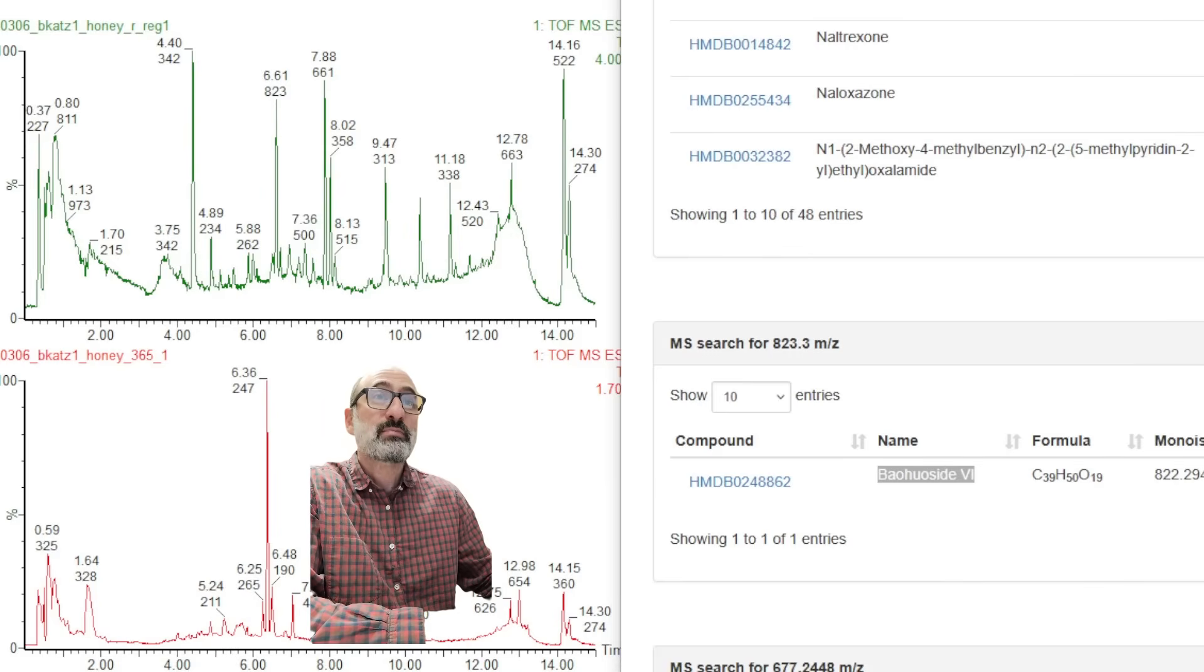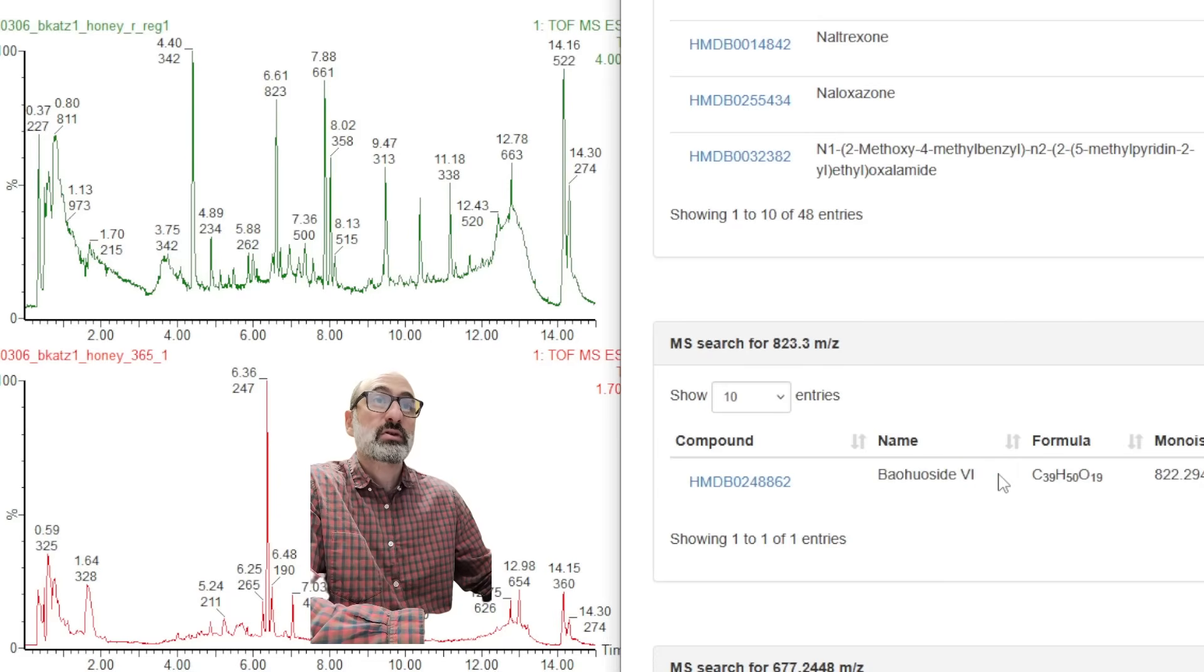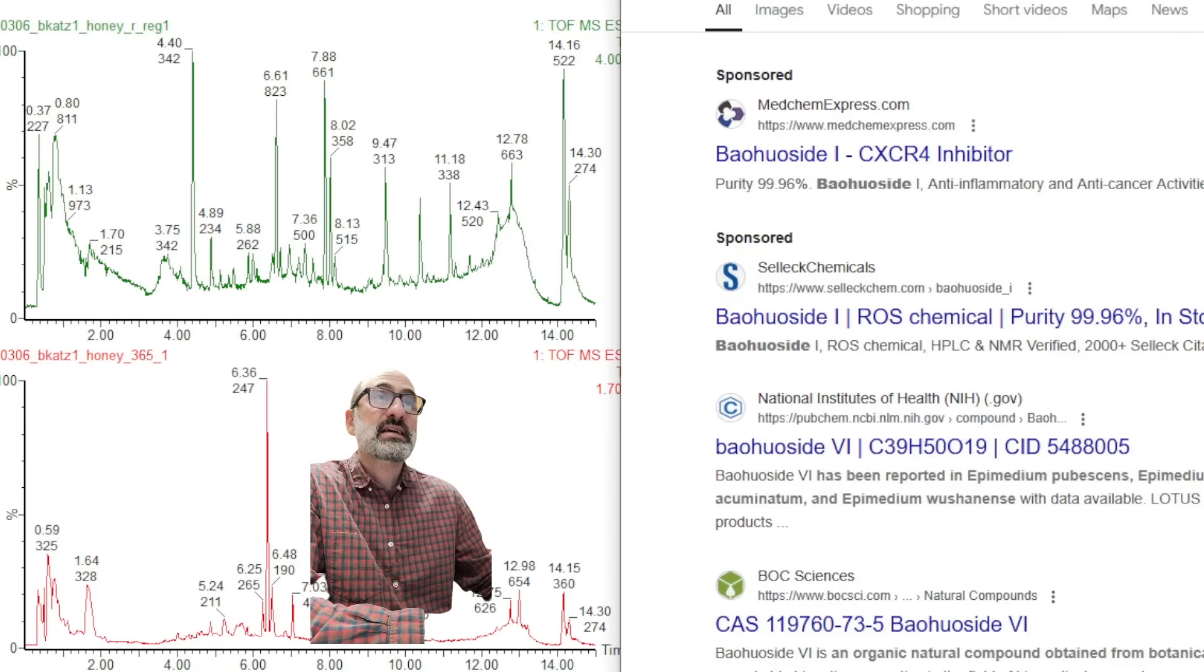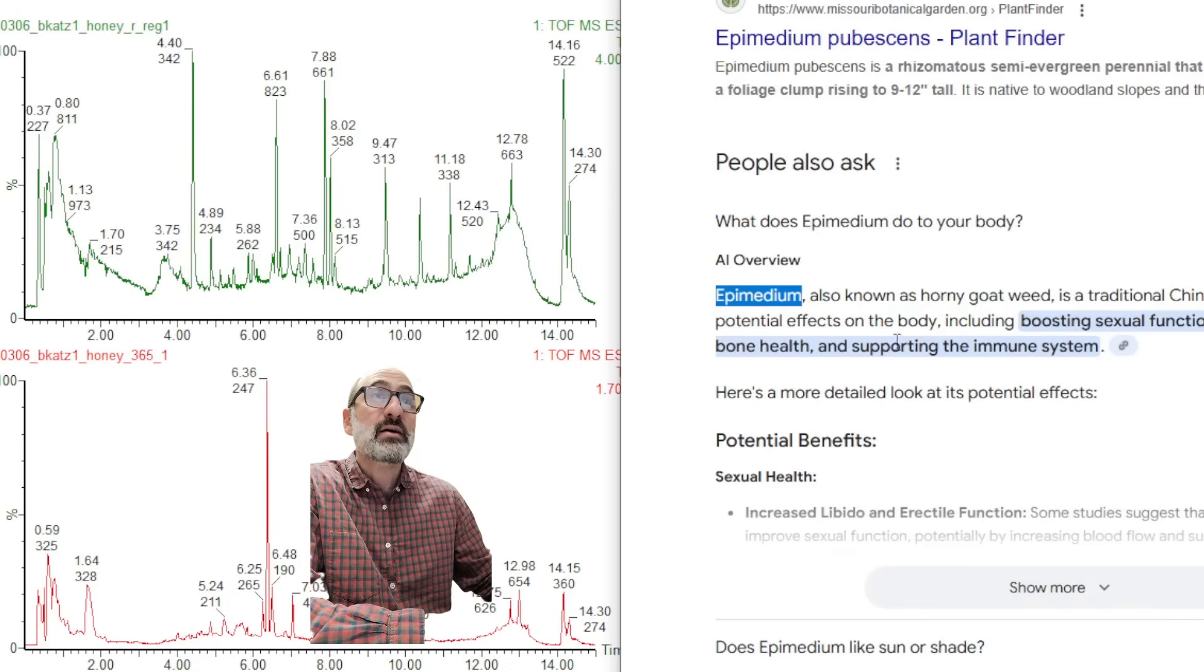823 peak is baouside VI? I guess 6? I don't know. That's a strange one. Let's search this guy out. Okay, so this is coming from Epimedium... I think, you know, I'm not an expert on my plants, but I think that could be horny goat weed. So, Epimedium is known... Better known as horny goat weed.